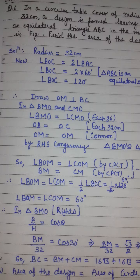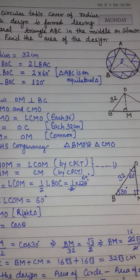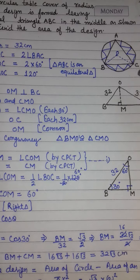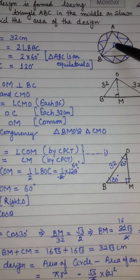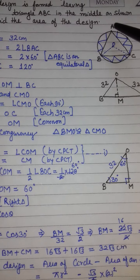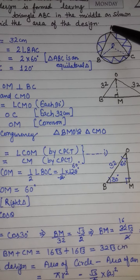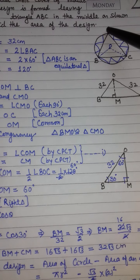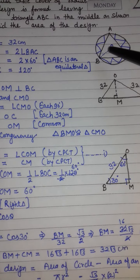हमें figure में दिया गया है — एक circle है जिसका design का area find करना है। इसका radius 32 centimeter given है। यह दो तरीके से find हो सकता है। पहला: circle के area में से equilateral triangle का area minus करें। लेकिन circle का radius तो है, equilateral triangle की side नहीं है।